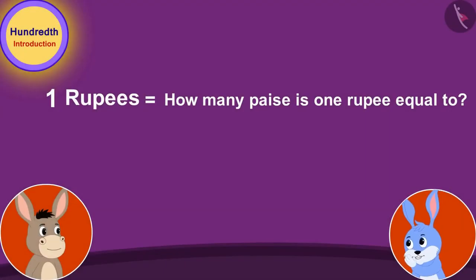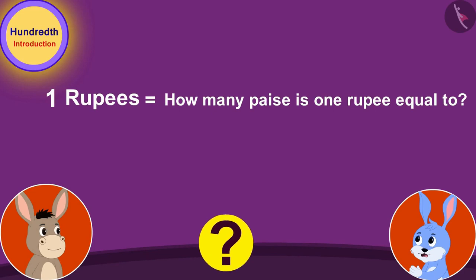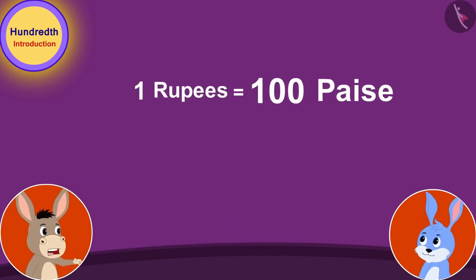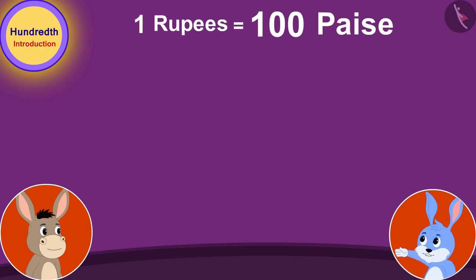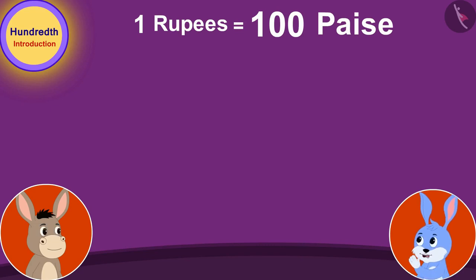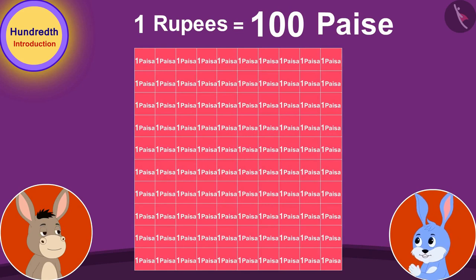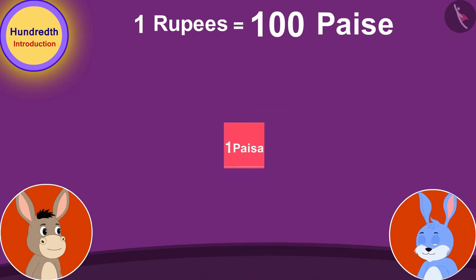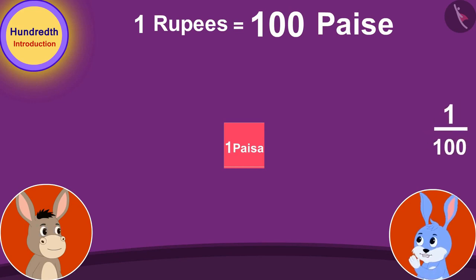Bunny laughed and said, Bhoala, how many paise is 1 rupee equal to? 100 paise. Bhoala replied quickly. Exactly. Suppose if we represent 100 paise by making a hundred squares in this way, then 1 square would be equal to 1 paise. If we take one of these hundred squares, then we can write it in the form of a fraction as 1 by 100.